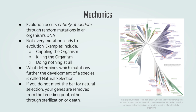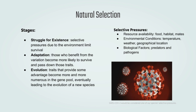Mutations are an essential part of evolution because this is what natural selection works and thrives on. Natural selection is essentially the process that evolution uses to make a new species. Natural selection first begins with a struggle for existence — there must be a selective pressure, which includes but is not limited to lack of food, habitat, mates, extreme changes in temperature, weather, or geographical location, as well as biological factors such as predators and pathogens that limit the survival of a certain species.